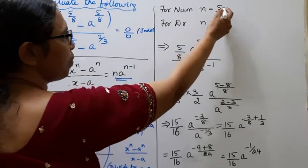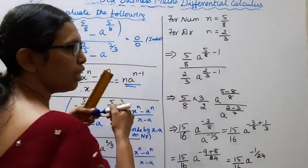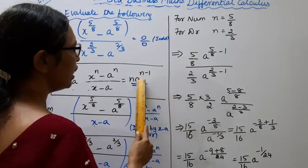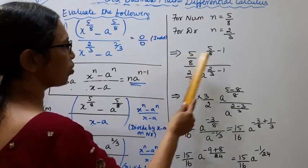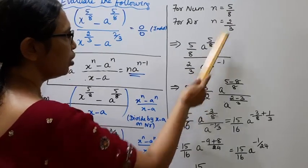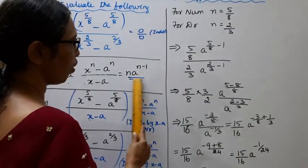Numerator n is 5 by 8, denominator n is 2 by 3. So applying the formula: 5 by 8 times a power (5 by 8 minus 1). Denominator is 2 by 3 times a power (2 by 3 minus 1). Let it be here.